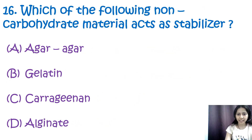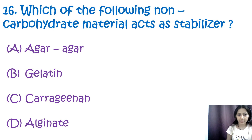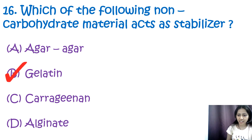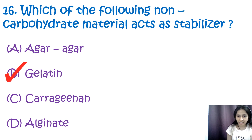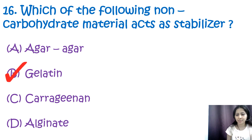Question 16: Which of the following non-carbohydrate materials acts as a stabilizer? Options are agar-agar, gelatin, carrageenan, and alginate. The correct answer is B, gelatin. Although agar-agar, gelatin, carrageenan, and alginate are all examples of stabilizers, agar-agar, carrageenan, and alginate are carbohydrates that act as stabilizers, whereas gelatin is a protein derived from collagen. Therefore, the non-carbohydrate stabilizer is gelatin.